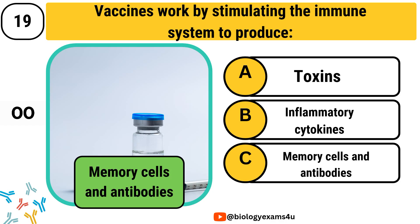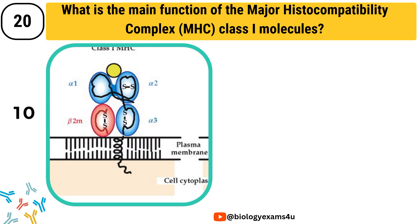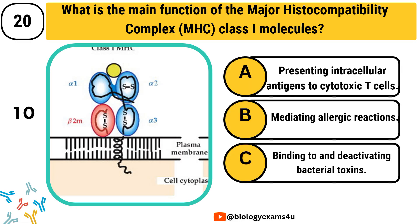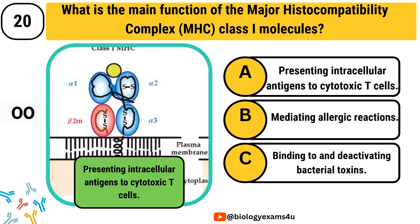Question number 20. What is the main function of the major histocompatibility complex MHC class 1 molecules? Option A, presenting intracellular antigens to cytotoxic T cells. Option B, mediating allergic reactions. Option C, binding to and deactivating bacterial toxins. The correct answer is presenting intracellular antigens to cytotoxic T cells.